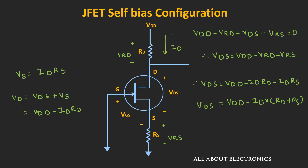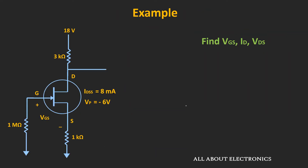Now let's take some examples to make the procedure clear. In this example, an N-channel JFET is configured in the self-biased configuration, and we are asked to find voltage VGS, current ID, and voltage VDS. Assuming the gate current IG is approximately zero, there will be no voltage drop across the 1 MΩ resistor, so VGS equals minus ID times RS. We assume the circuit operates in the saturation region and will validate this assumption after finding the values.